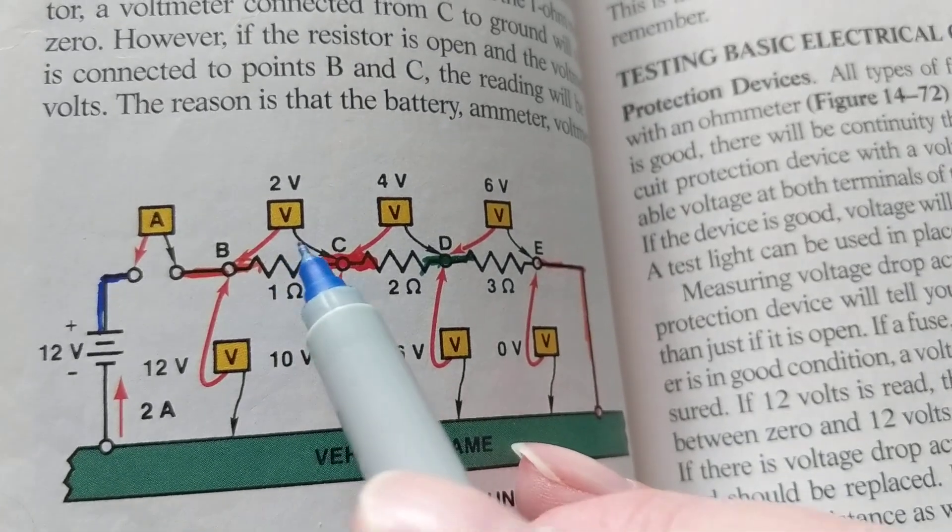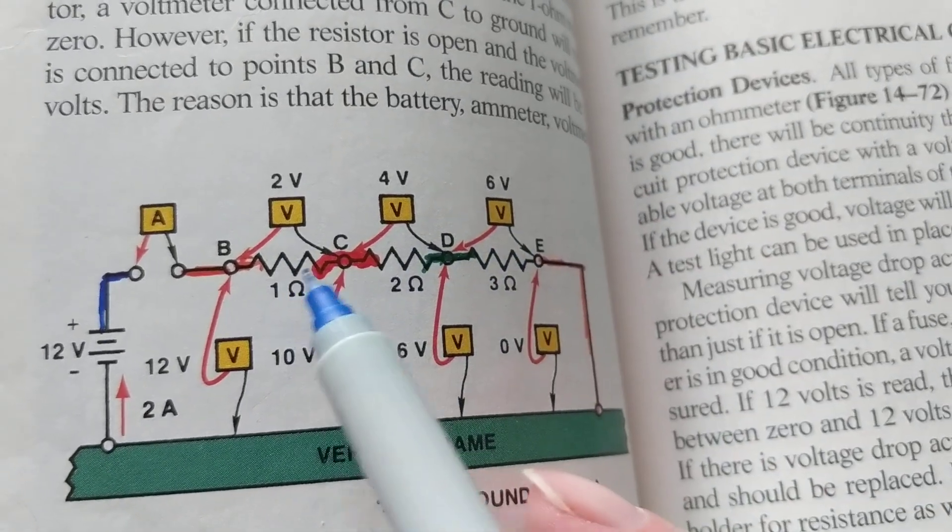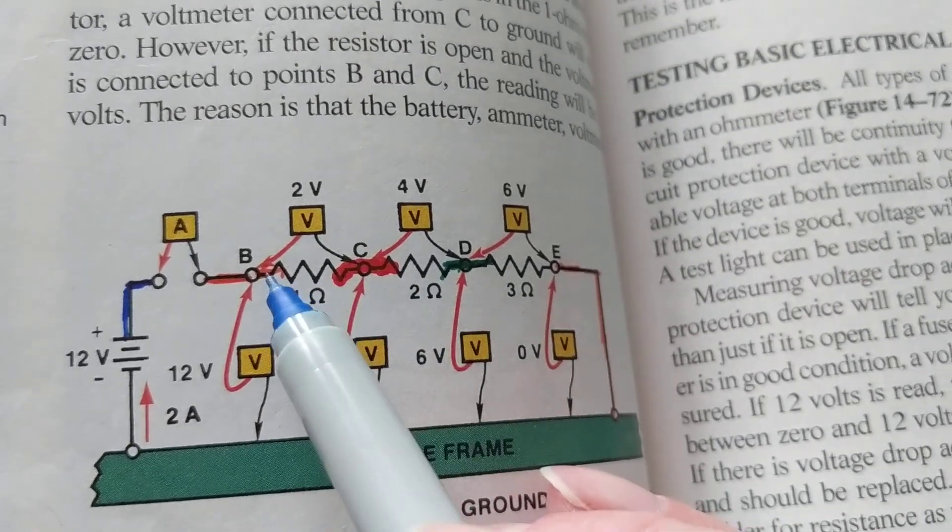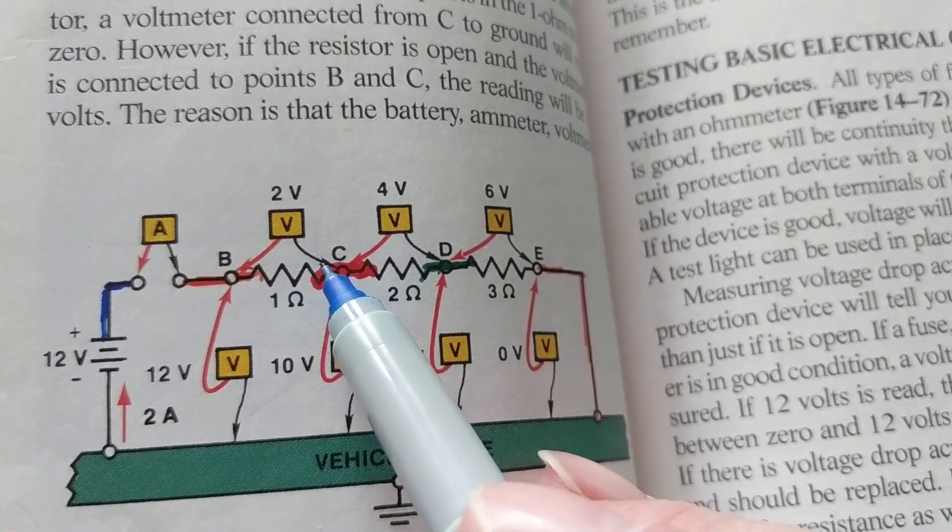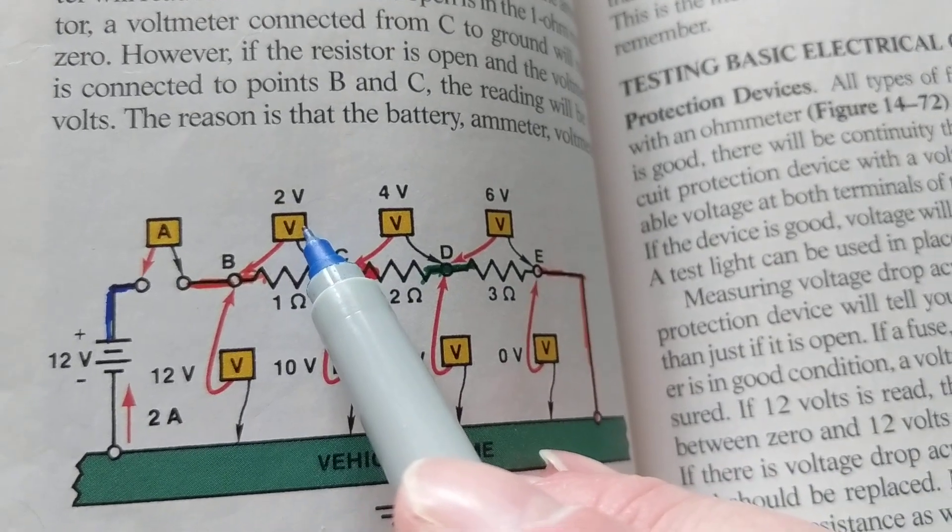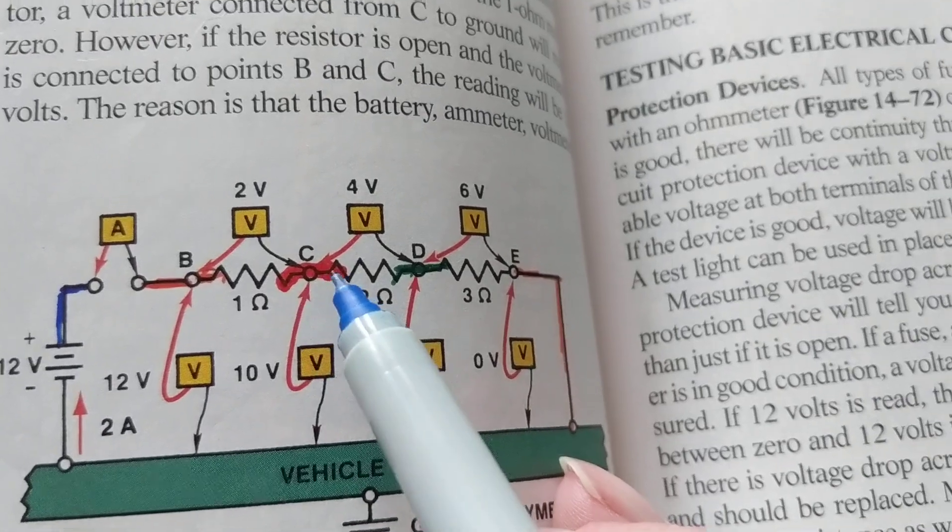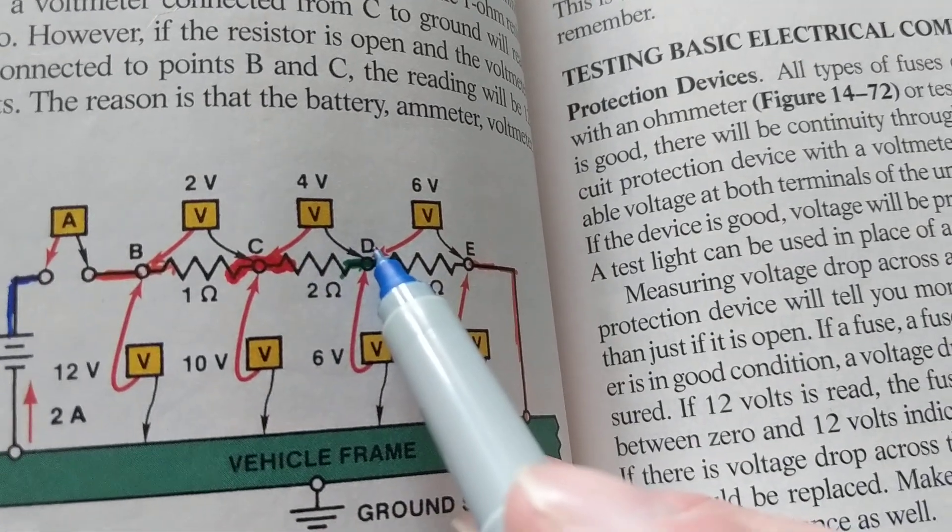Let's look at these examples over here, putting the multimeters. Let's say these are bulbs, whatever these are - resistors. If you go from here to here with the meter, you're going to measure 2 volts. If you go from B to C, you're going to measure 2 volts. If you go from C to D, you're going to measure how much? 4 volts.